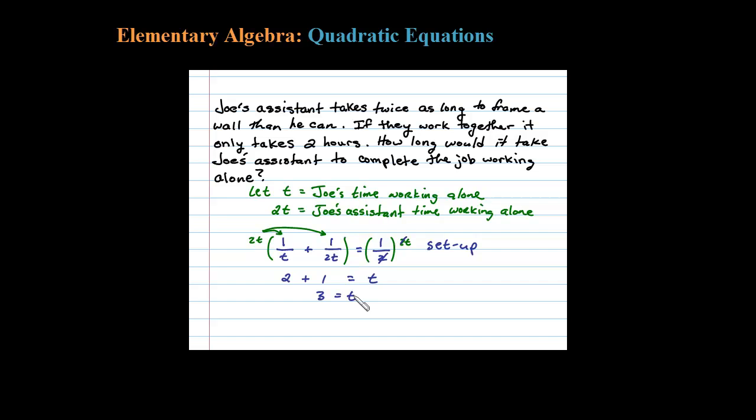So if T is the time it takes Joe working alone, and that's three hours, then 2T would be six hours. And that would be the amount of time it would take Joe's assistant working alone to do the job.